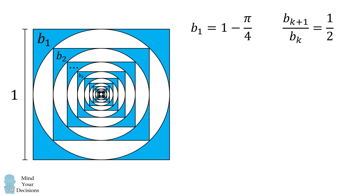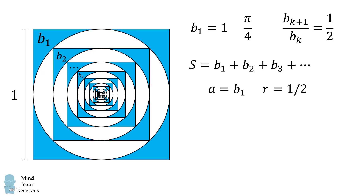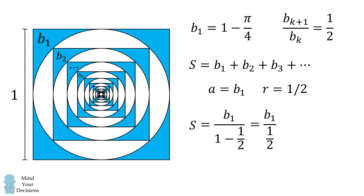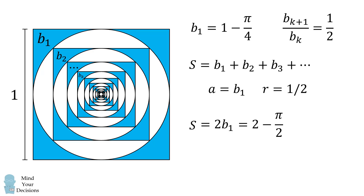Let's now get to an answer. We want to calculate the infinite sum b1 plus b2 plus b3 and so on. The first term is b1, and the common ratio is 1/2. Using the formula for the sum of a geometric series — a divided by 1 minus the common ratio — with a equal to b1 and ratio equal to 1/2, we get b1 divided by 1/2, which equals 2 times b1. Since b1 equals 1 minus π over 4, the total is 2 minus π over 2. And that's the answer — the sum of all the blue areas equals 2 minus π over 2. What a beautiful answer.